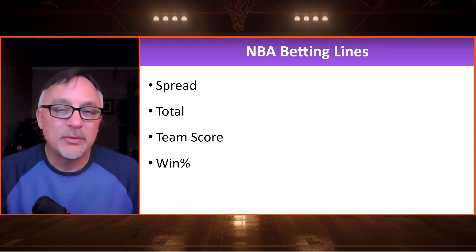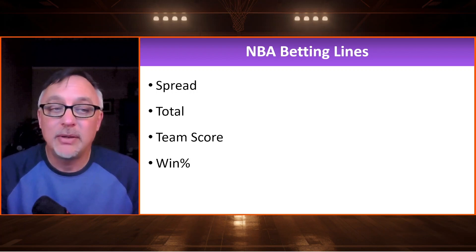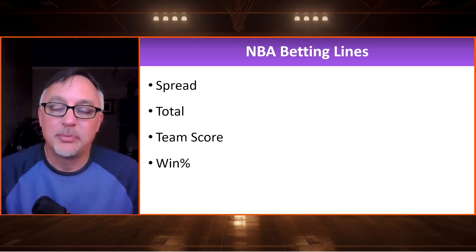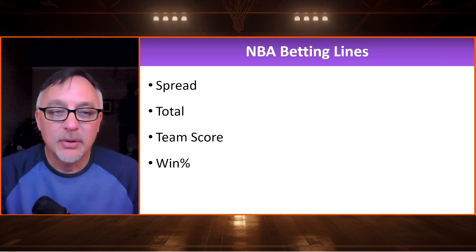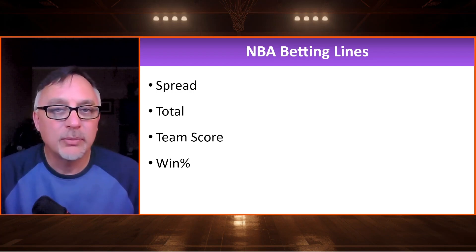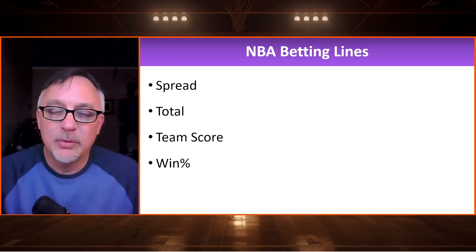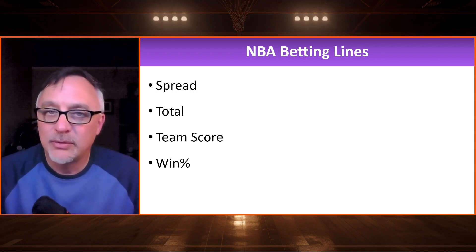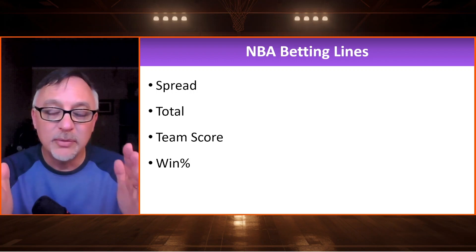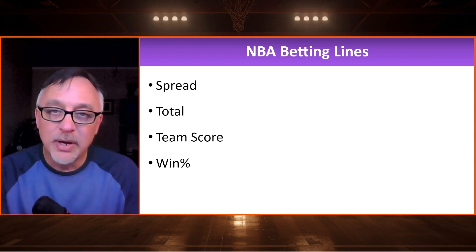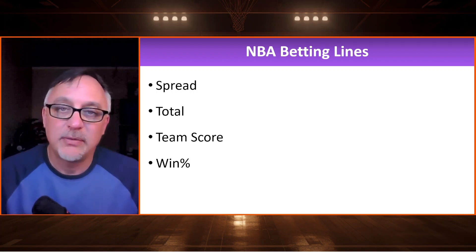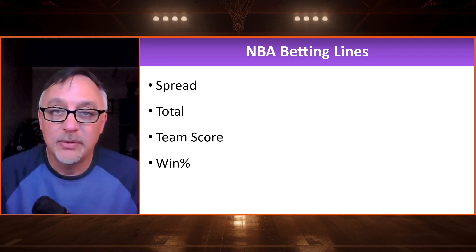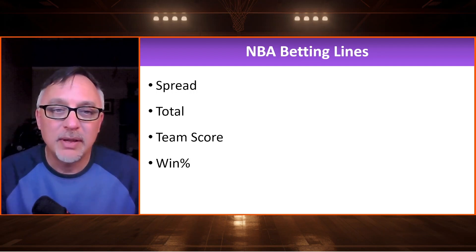What are we using all this information for? We want to build a model to predict the spread, the total, the team score, and the win percentage. I'm going to work this one backwards a little bit. If we can predict the team score for both teams, we get the total by adding those two numbers together, and we subtract opponent score from team score to get the spread. Despite the fact that I have spread listed first, we're going to shoot for the team score first.